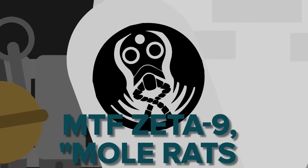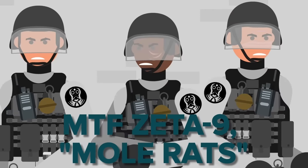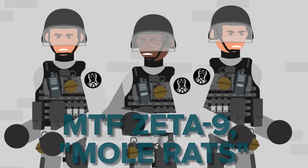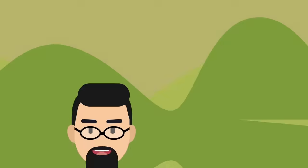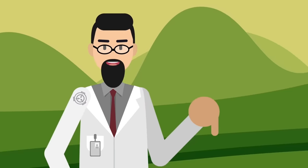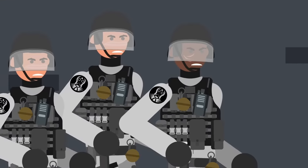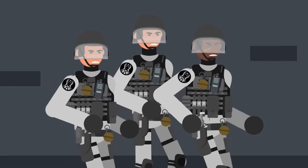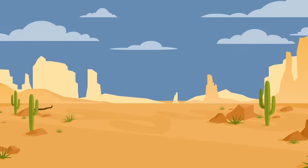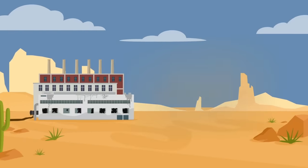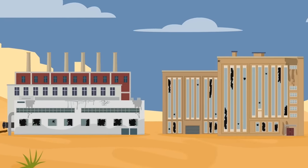MTF Zeta-9, Mole Rats, are a task force that specializes in the exploration and containment of anomalous areas that are either enclosed or underground, particularly if, due to the effects of the anomaly, the space-time fabric of the area is unstable. You may remember them from our series on SCP-1730, the mission into and out of the anomalous Site-13.